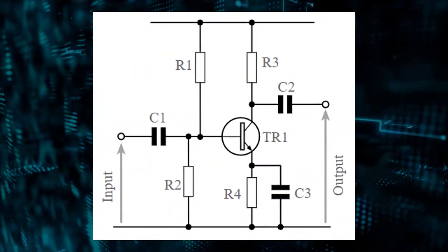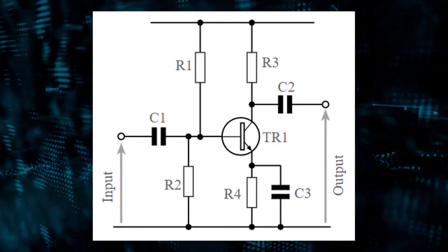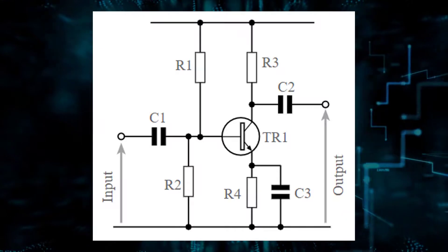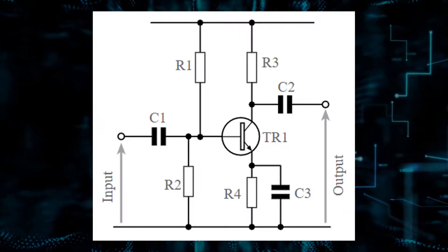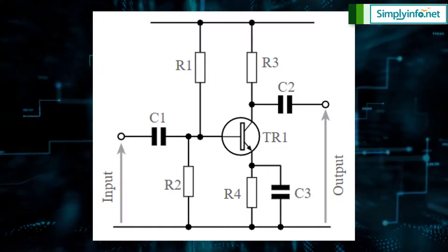Practical Common Emitter Amplifier Circuit. However, for the circuit to be able to operate in a real system, other elements such as bias, decoupling and the like need to be added.